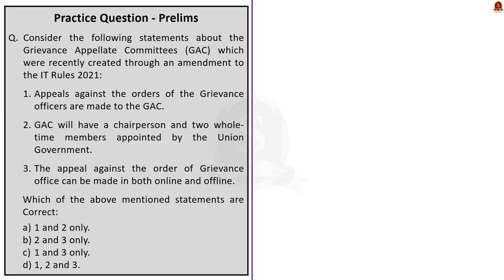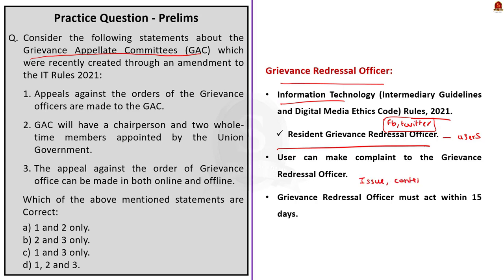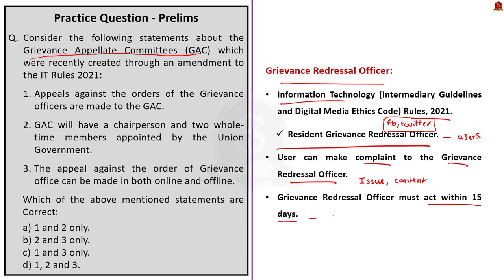The next question is about the Grievance Appellate Committee (GAC). The Information Technology Rules 2021 mandated social media companies like Facebook and Twitter to appoint India-based resident grievance officers. These officers are responsible for overseeing the grievance redressal mechanism for complaints from users. If a user has an issue with an account or content on a social media platform, they can complain to the company's grievance officer, who must act and dispose of the complaint within 15 days. Earlier, if unsatisfied, the user could appeal the decision in court.